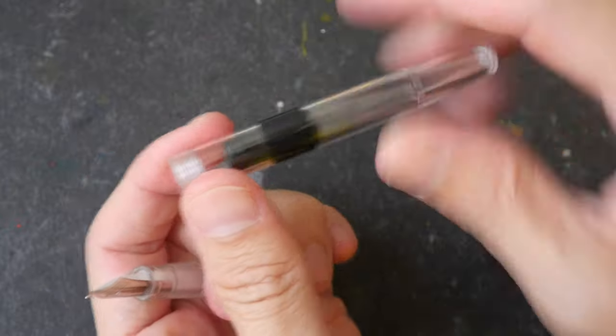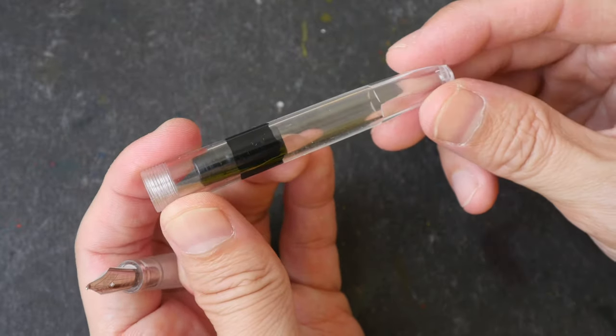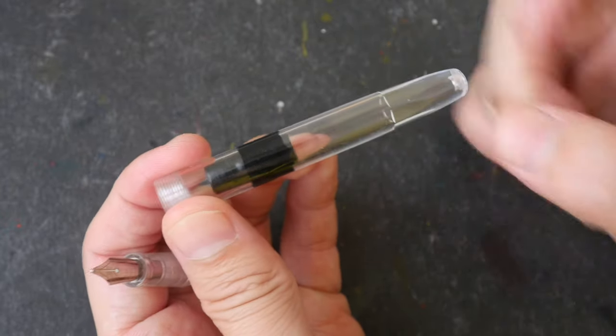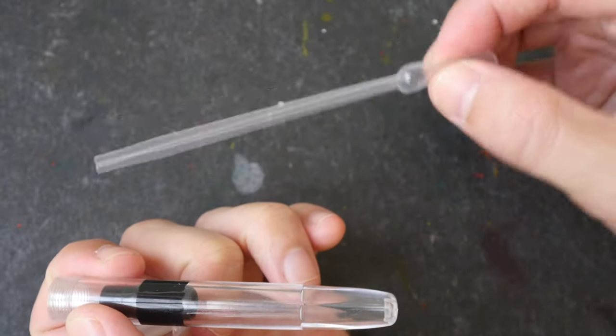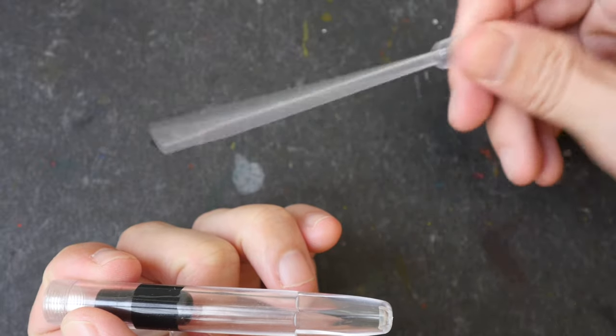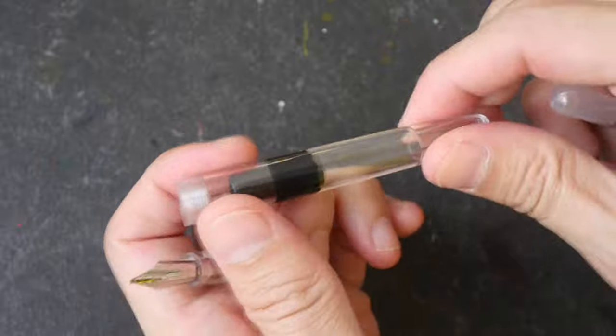Let me just unscrew this part. Now this whole body here is the ink converter, and notice there is no refilling mechanism built into the body. This pen is sold with this eyedropper made with really cheap plastic to help you refill the ink.